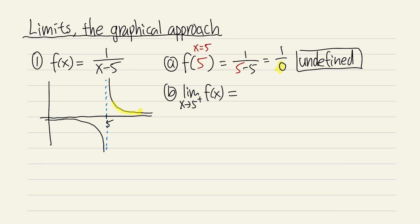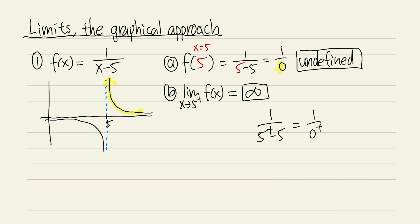As we approach 5 from the right, the y value gets bigger and bigger because the curve goes up and up. For a limit, we focus on the behavior of the y value — what it approaches. It approaches positive infinity, so the answer is positive infinity. If you plug 5-plus into the denominator you get 1 over 0+, which we can interpret as positive infinity.